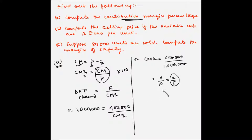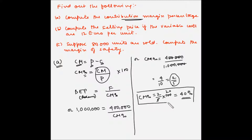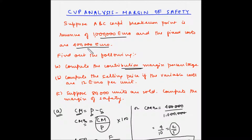Multiplying the contribution margin ratio by 100 gives us 40%. So the contribution margin percentage is 40%. In other words, out of the selling price, 40% is being contributed towards the recovery of the fixed cost. Once these fixed costs have been recovered, this 40% will contribute towards profits for the company.